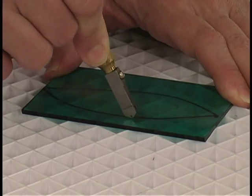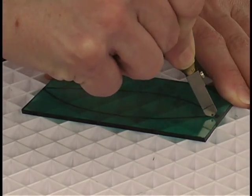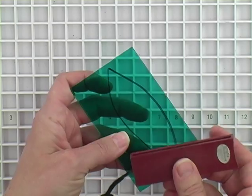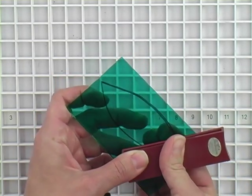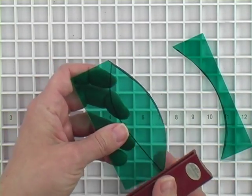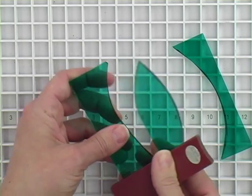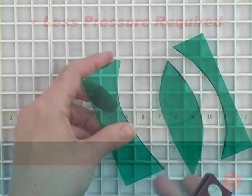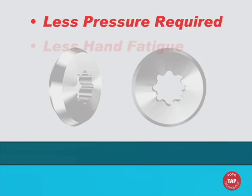The act of creating a score is no different with a tap wheel than with a standard, smooth rolling wheel. What is different is that you will find it takes less pressure to achieve a perfect score, resulting in easier breakouts, less hand fatigue, and a longer lasting tool.